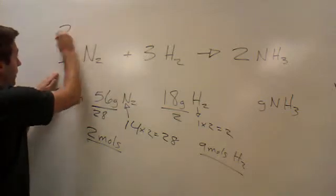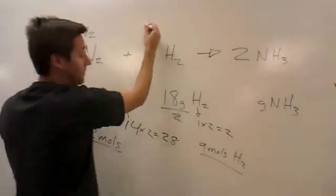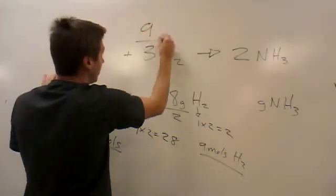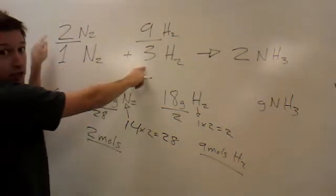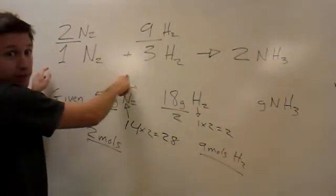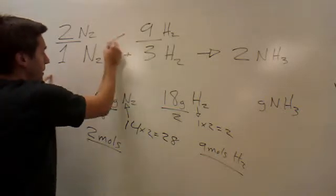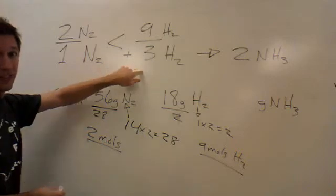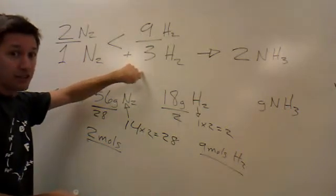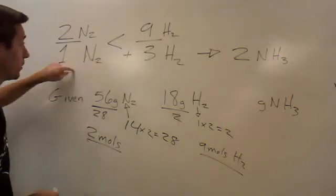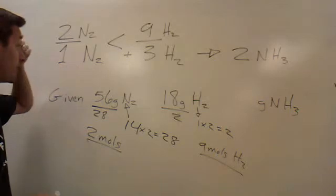We have two N2s available. We have nine H2s available. Which number is bigger, 2 over 1 or 9 over 3? 9 over 3 is bigger than 2 over 1. Because of this, we would say that the hydrogen is the excess reagent. We have plenty of hydrogen. We don't need to worry about running out of this one. We will run out of nitrogen, though.